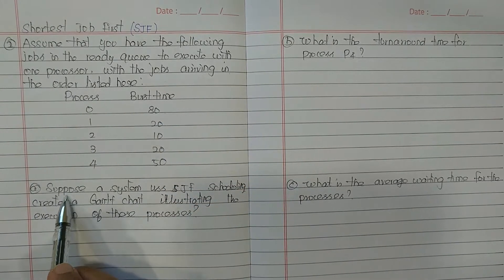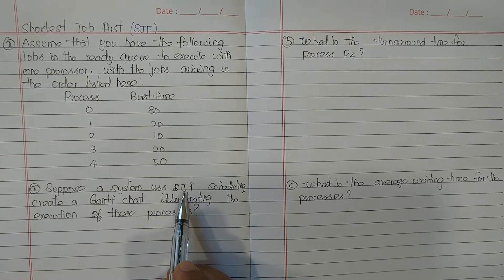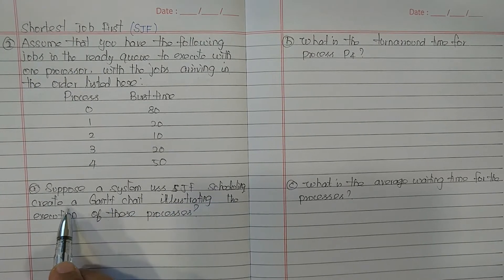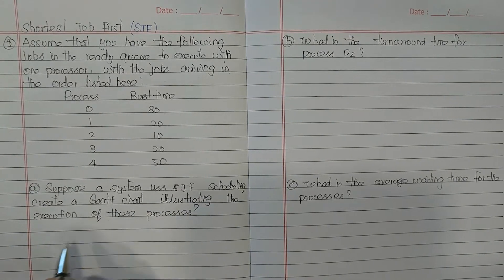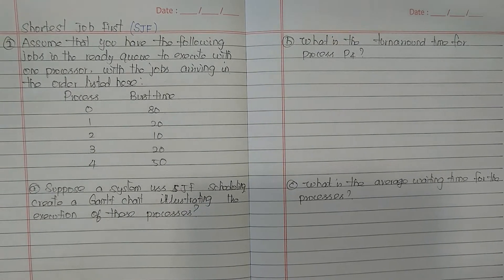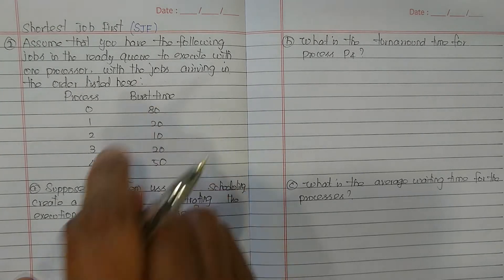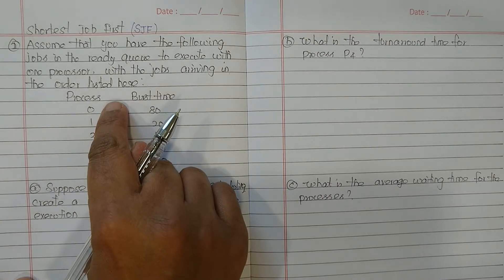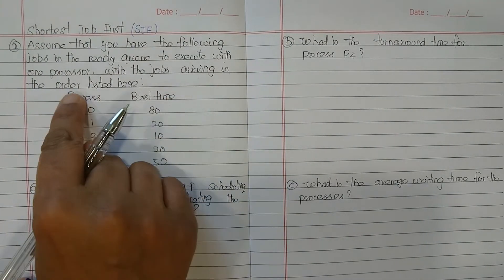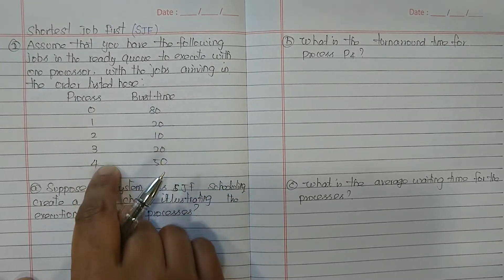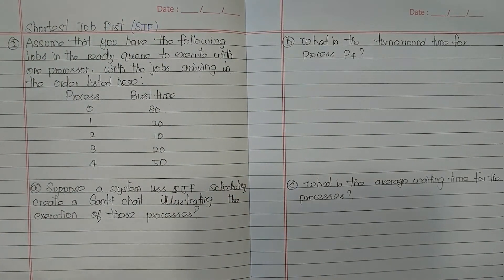The question is: suppose a system uses Shortest Job First (SJF) scheduling — create a Gantt chart illustrating the execution of these processes. Assume that the arrival time of all processes is zero, meaning they all arrive at the zeroth millisecond, but in the order listed.